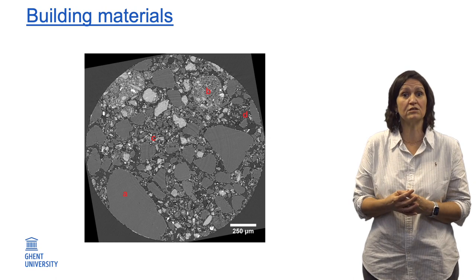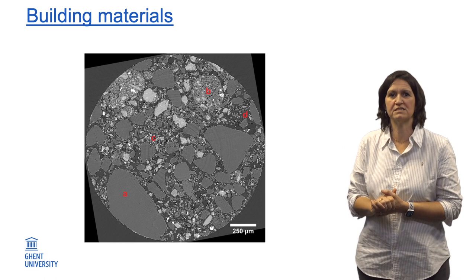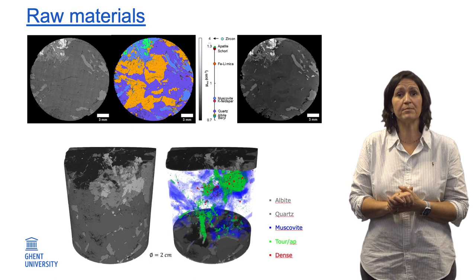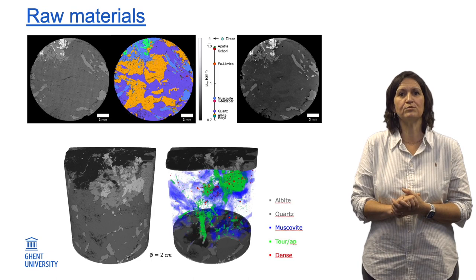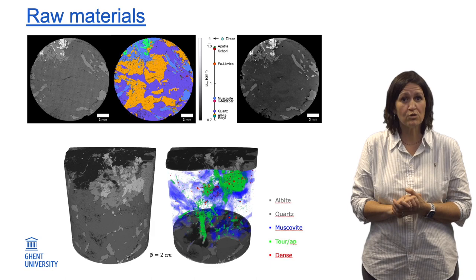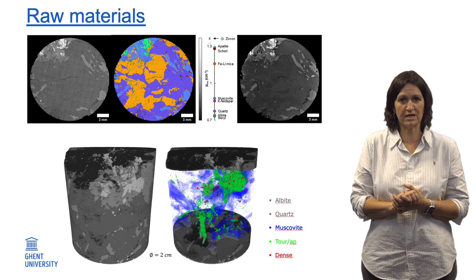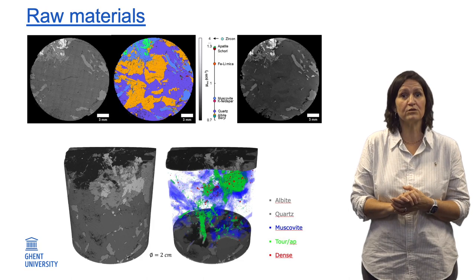X-ray CT also allows us to study the use of recycled materials or circular building blocks, and how these materials behave as a function of time. These are often very complex materials, as you can see here. We also study the 3D structural and chemical characterization of valuable raw materials, which is why we contribute to mineral processing, urban mining, and the recovery of valuable raw materials from industrial residues and landfill mining. To do so, we correlate data coming from different techniques such as X-ray CT, hyperspectral CT, X-ray fluorescence, and scanning electron microscopy. For example, we work on methods to identify different minerals in critical ores, like illustrated here.